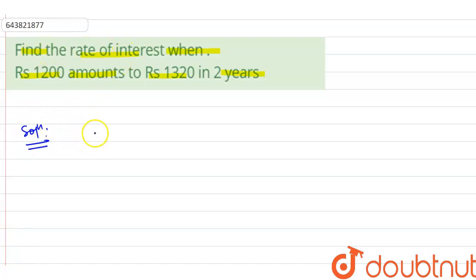We have to find the rate of interest, means we have to find rate R. What is given? Rupees 1200 amounts to 1320, means 1200 is principal.